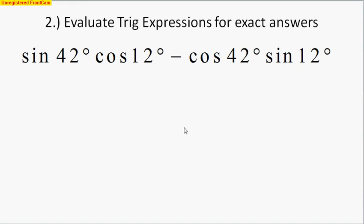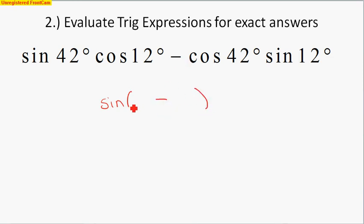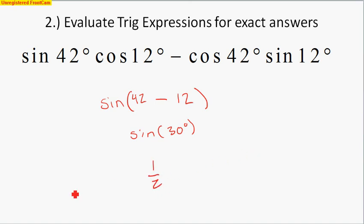We could also use these formulas in reverse — to take a long trig expression and write it with only one trig function. For example, if I see sine-cosine then cosine-sine, that tells me it's a sine function. Since there's a minus sign, I use subtraction: the first angle is 42° and the second is 12°, so this is sine of 30 degrees. Sine of 30° is 1/2. That's your final answer — pretty simple.